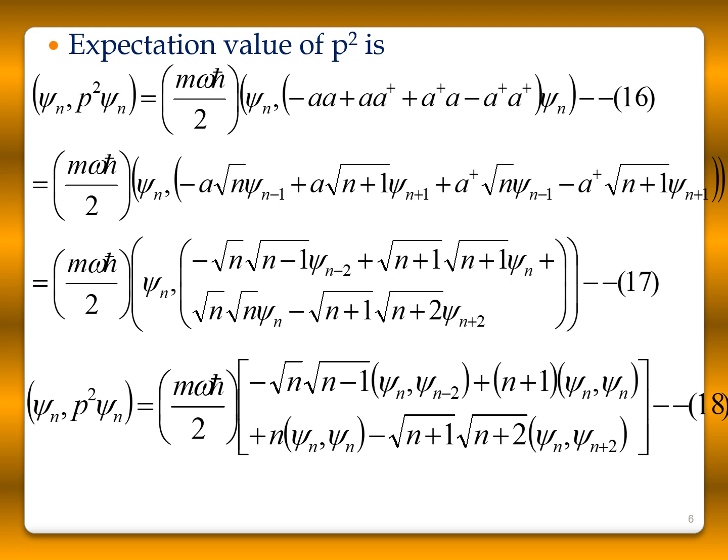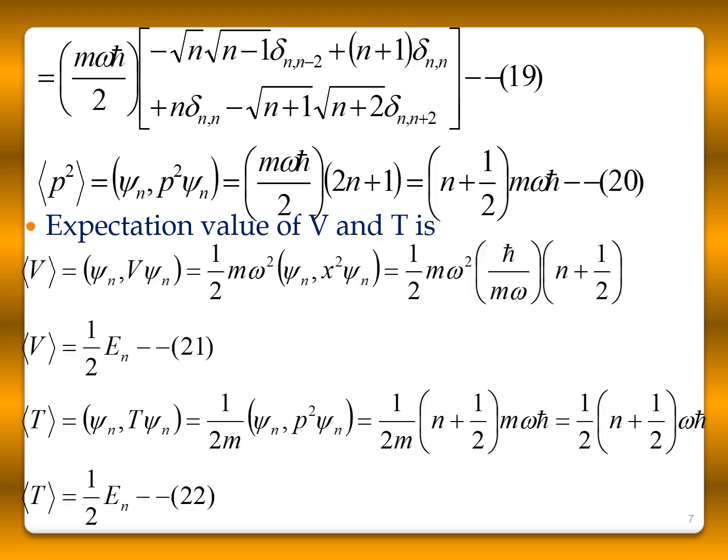Since ⟨ψₙ|ψₘ⟩ = δₘₙ, all off-diagonal terms vanish. Only the δₙₙ terms contribute, giving (mωħ/2)(2n+1) = (n + ½)mωħ.